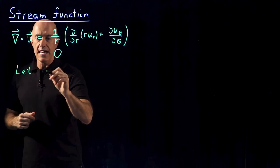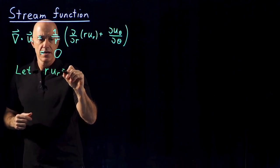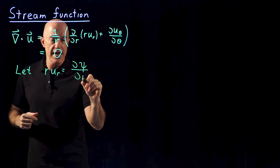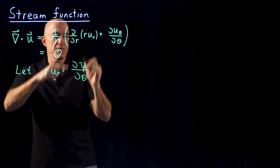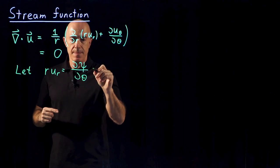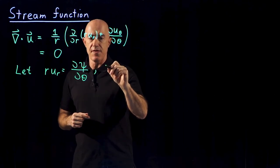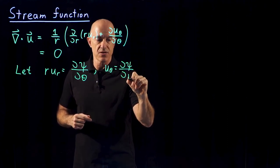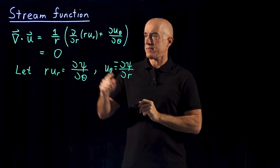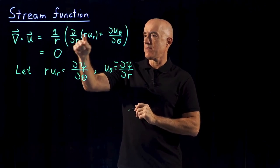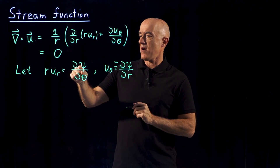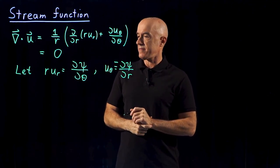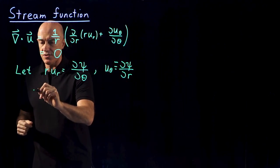We can let r·u_r equal the partial derivative of a stream function ψ with respect to θ, so that we have a mixed partial derivative. And then we can let u_θ equal the negative partial derivative of ψ with respect to r. So then the sum of these two terms will be the sum of two mixed partial derivatives, with one having a negative sign. This ψ is called the stream function.